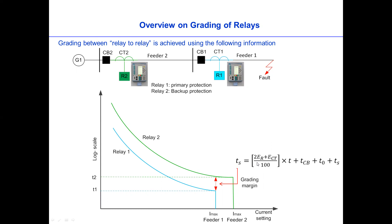And how do we calculate the grading margin of the relay? So we have this formula: 2 times ER plus ECT 400 times T plus TCV plus TO plus TS. Now we need to be familiarized with this parameter.